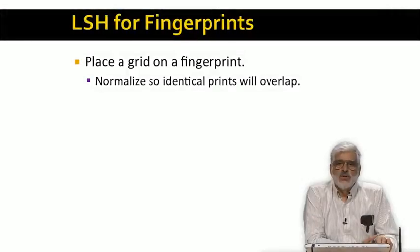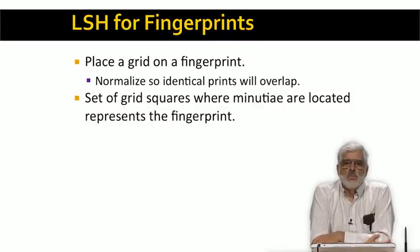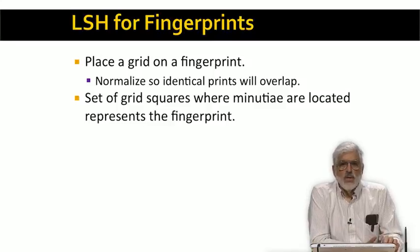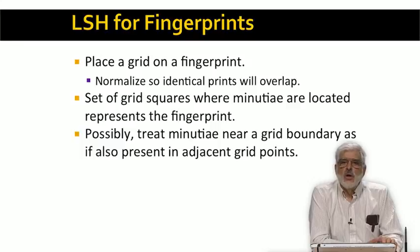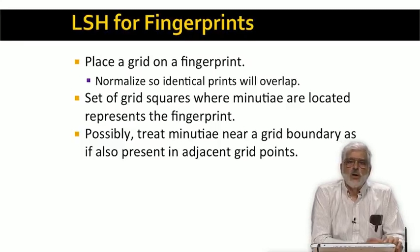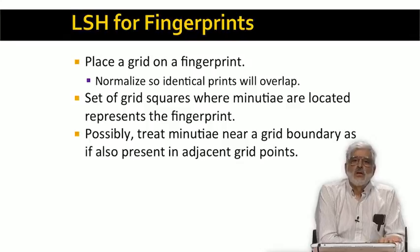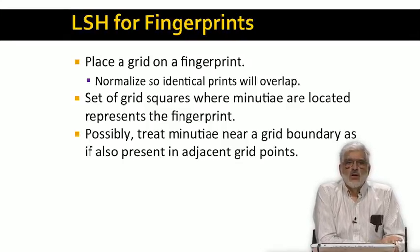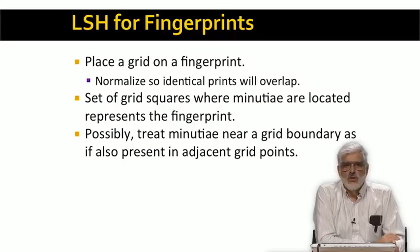You place a grid over each fingerprint image. The grid must be scaled and oriented properly so that if you have two images of the same fingerprint — perhaps one at a different angle or a different size — the grids will overlap. Then you represent each fingerprint by the set of grid squares that contain minutiae. Since some minutiae will be right on or near a boundary, it is useful to regard such minutiae as present in the squares on both sides of the boundary. So it looks like we have reduced the problem of finding matching fingerprints to the problem of finding similar sets of grid squares that have minutiae.